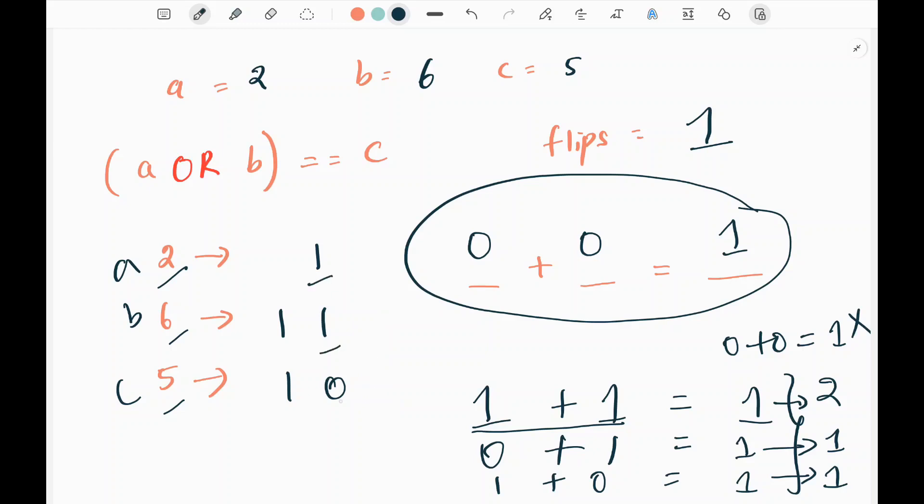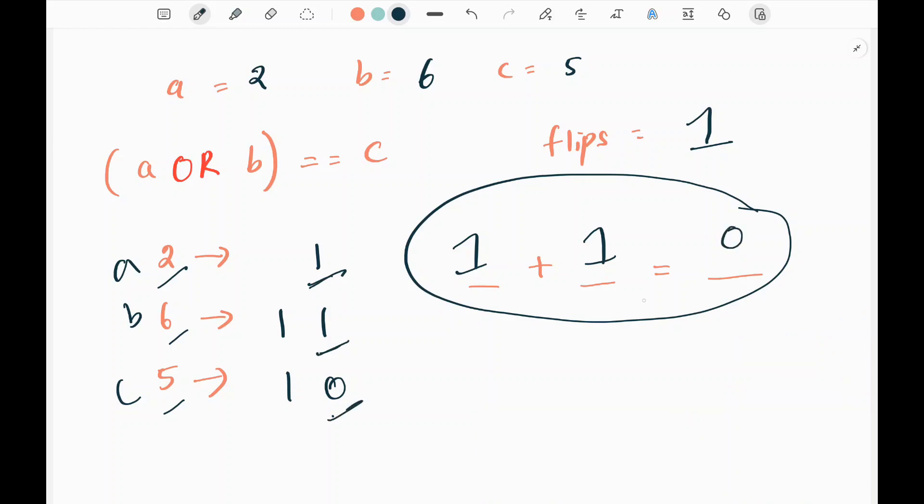Then I pick the next set of values that is 1 and 1. So from a and b we are picking 1 and 1 and c is 0. So now again this equation is not valid. 1 plus 1 is 1. Actually it is not 0. So how many times I can flip a and b I need to check now. So in this scenario I need to flip both my a and b to make the equation valid. So we are flipping 2 times.